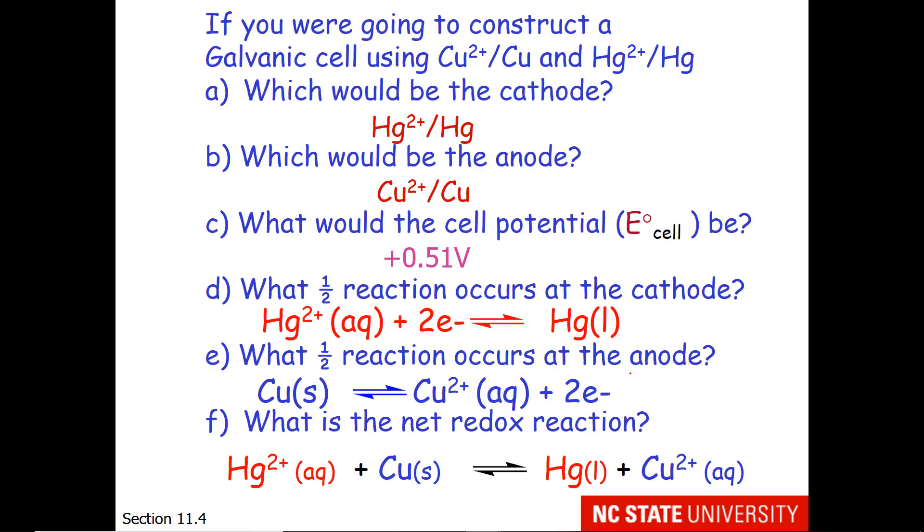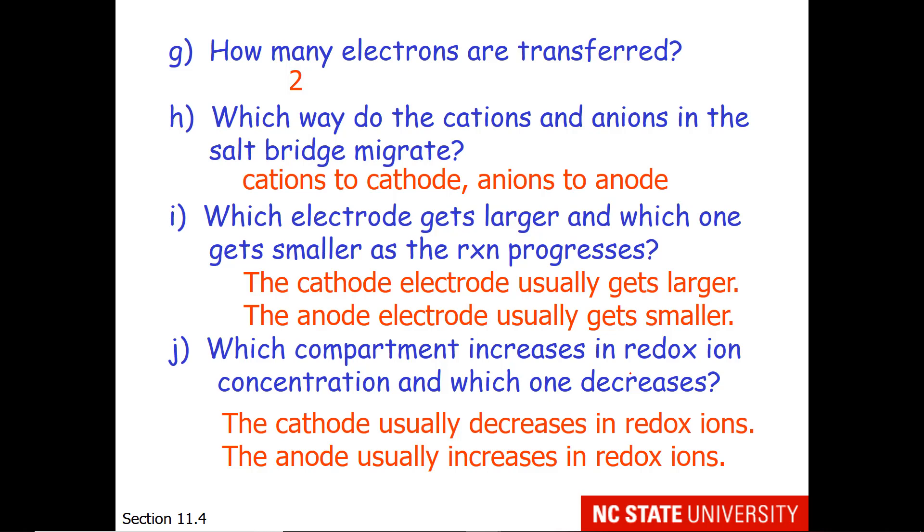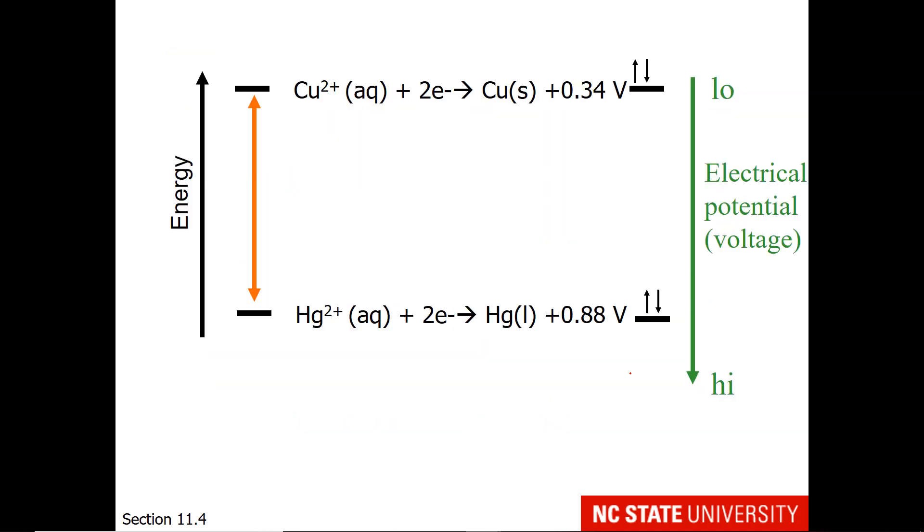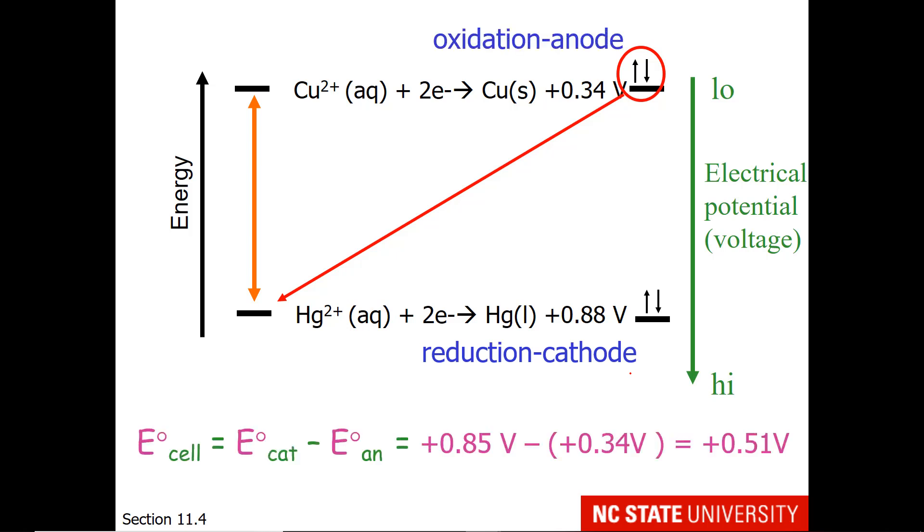So that was a long list of questions, but I hope you saw that it didn't take very long to go through it and answer every last one of these questions. If we relate this to the redox table, please note that spontaneous reactions always have electrons falling downward from right to left. So copper has electrons that are spontaneously transferring to mercury 2+. Reduction occurs at the cathode and oxidation at the anode. The difference in voltage between these two is +0.51 volts.